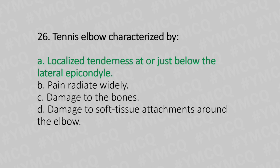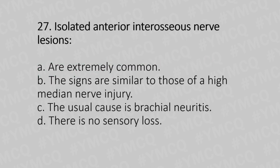Now let's move to question number 27. Isolated anterior interosseous nerve lesion. Option A: are extremely common. Option B: the signs are similar to those of high median nerve injury. Option C: usually caused by brachial neuritis. Option D: there is no sensory loss. And the answer is Option D, there is no sensory loss.